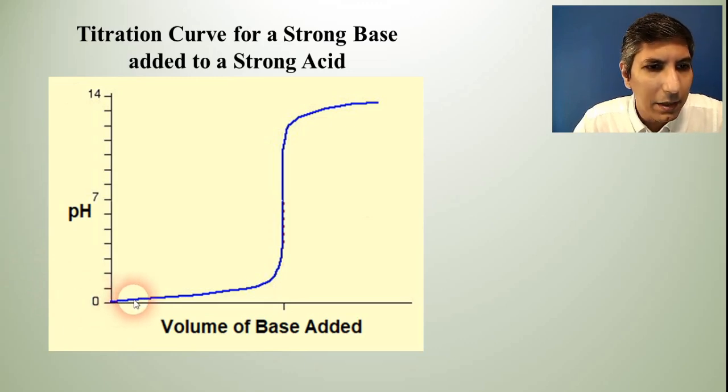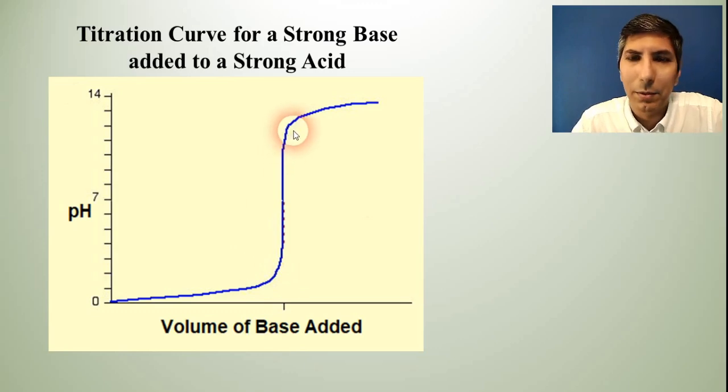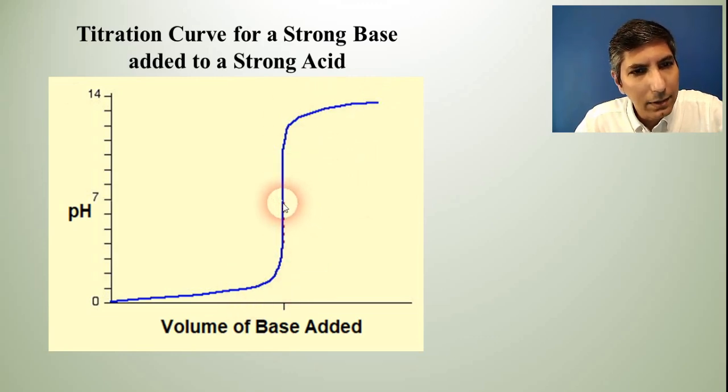And as we add the base, the pH goes up slowly. Notice how it goes up slowly and slowly and slowly. And then at a certain point, it just shoots up. And we'll talk about why that happens here in a later video. But notice that at some point it just shoots up and then it keeps on going up more gradually after that. It's almost like an S curve here. It looks like a big letter S.